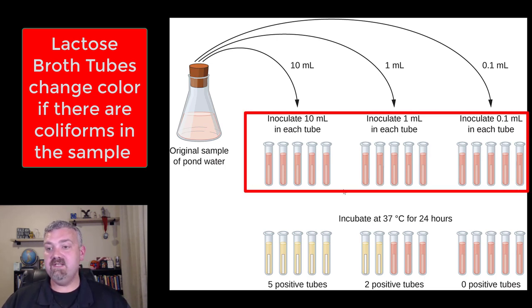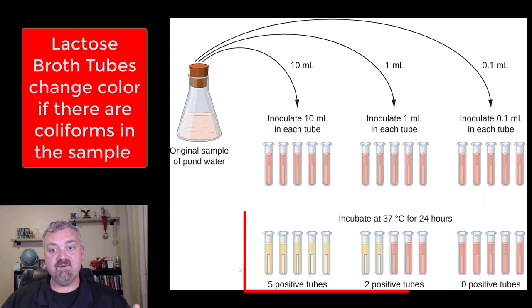You see on top you've got the 15 tubes that are reddish—those will be your lactose broth tubes. And then on the bottom after incubation you see that some of them are turning yellow. That means there are microbes there that are digesting the lactose, causing a pH change, and that's why you see the color change.